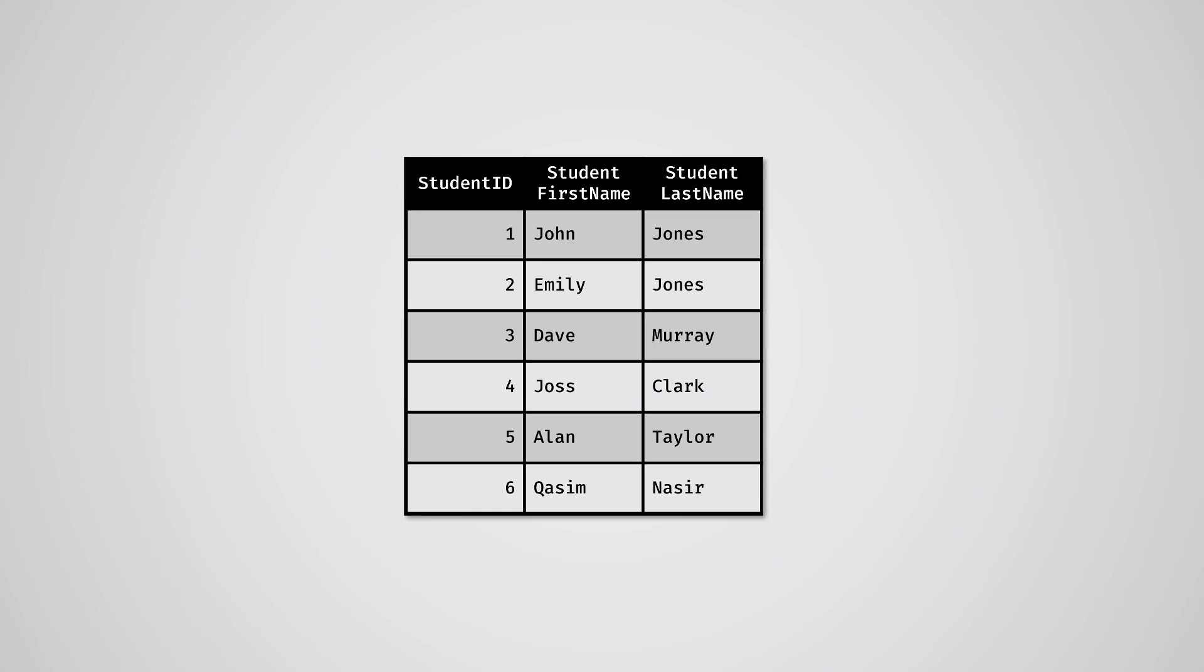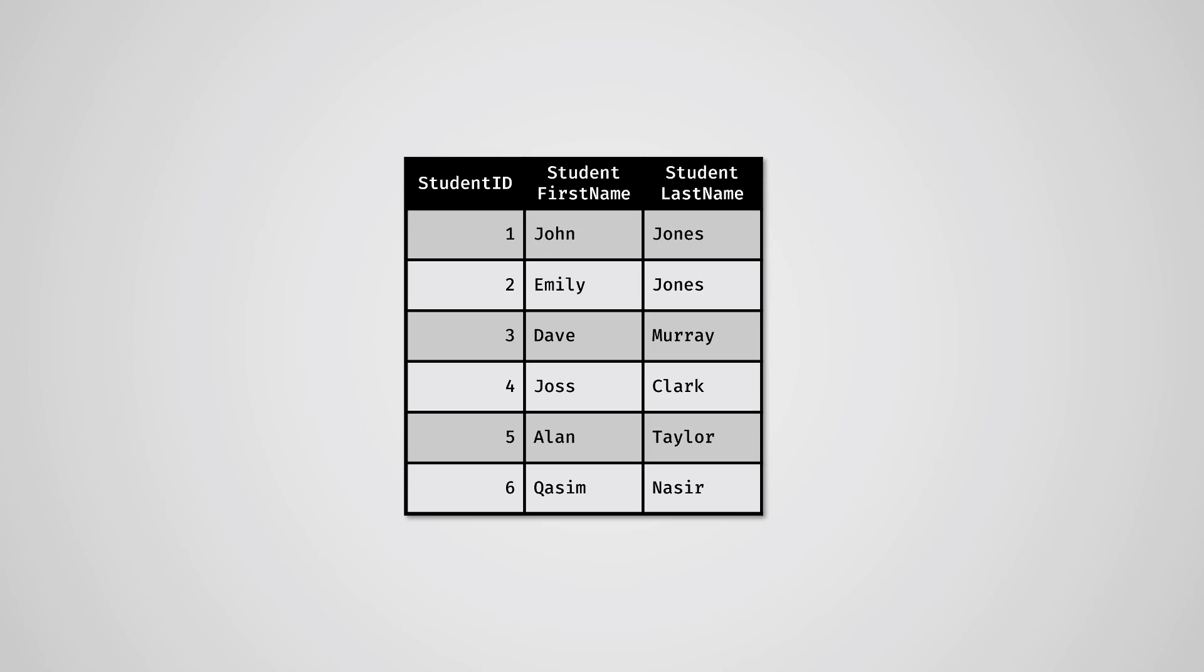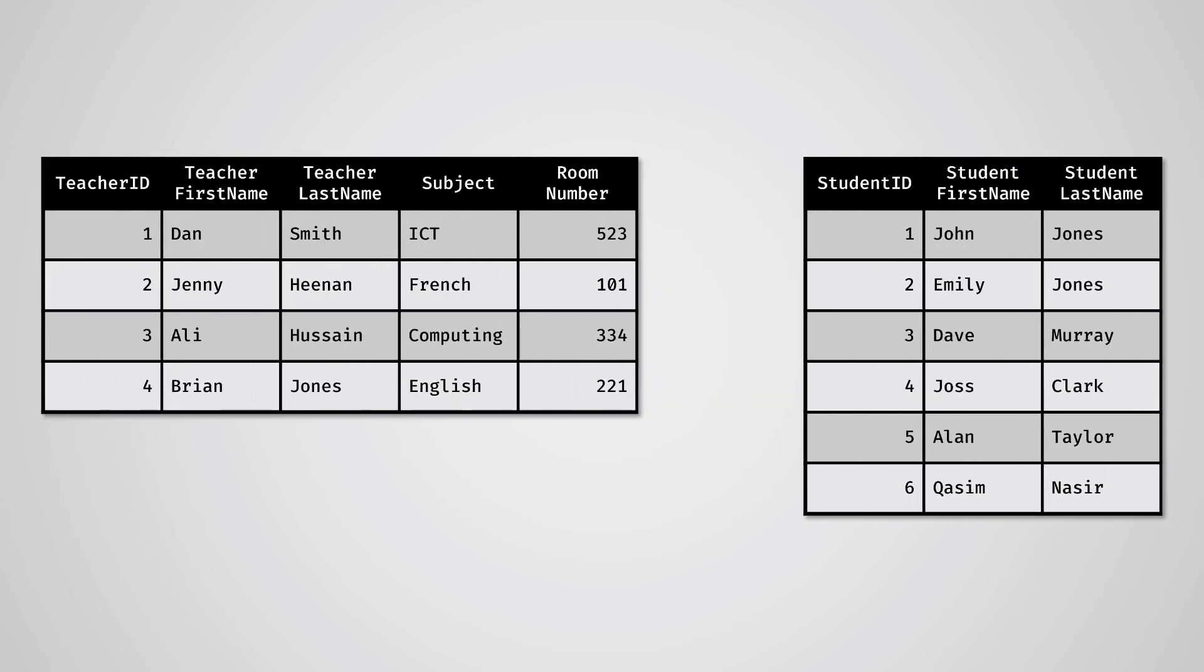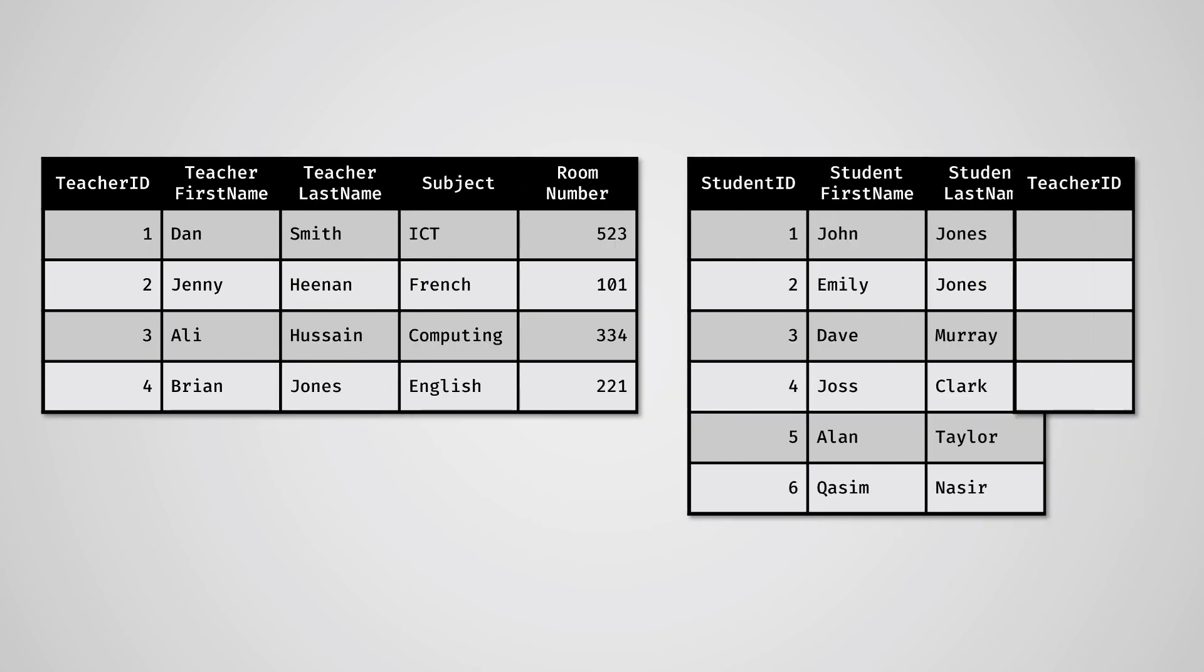The solution is to create a new table called student. This will have all the data we need about each individual student. However, we need to link the teacher table and the student table. We do this by adding a new column to the student table called teacher ID. This will contain all the relevant data from the primary key column teacher ID in the teacher table. The new column is called a foreign key and is defined as a column in one table that contains data from a primary key column in another table.